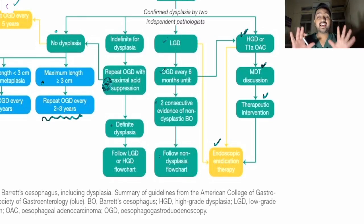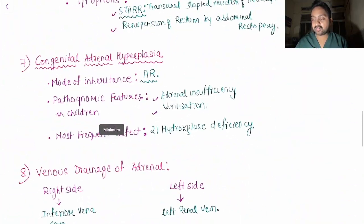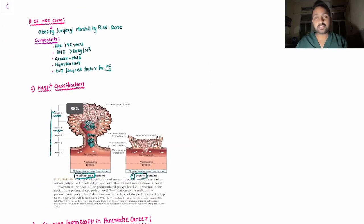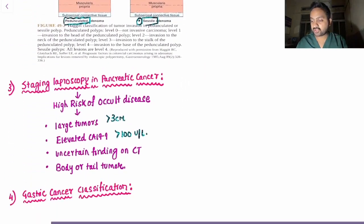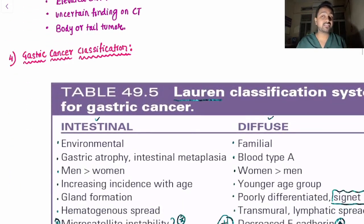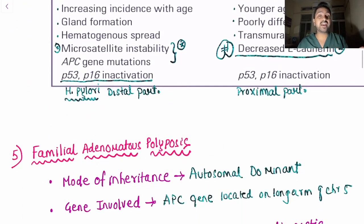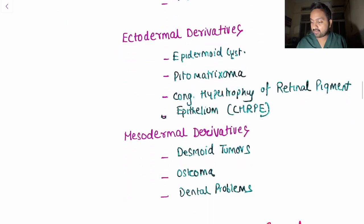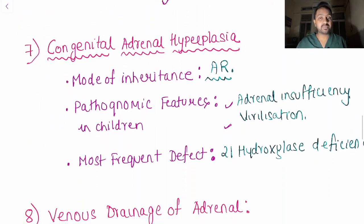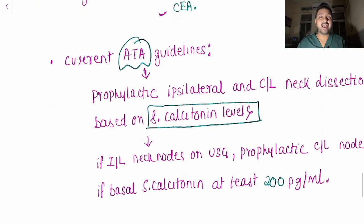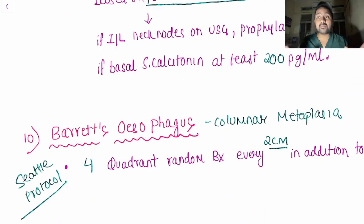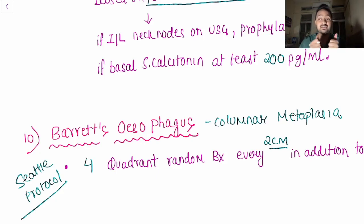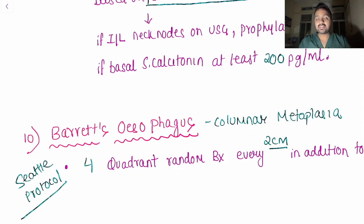Those were the 10 special surgery topics: OSMRS score, Haggitt classification, staging laparoscopy in pancreatic cancer, Lauren classification for gastric cancer, familial adenomatous polyposis, solitary rectal ulcer syndrome, congenital adrenal hyperplasia, venous drainage of the adrenal, medullary thyroid carcinoma, and Barrett's oesophagus. This does not mean you skip other topics — give special focus to these 10. All the best for your exams; keep revising, as that is the key to success.